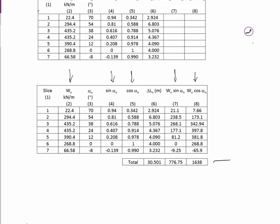And then we're going to need the sum of those last three columns. This is the sum of delta L. This is the sum of W sine alpha. And this is the sum of W cos alpha.